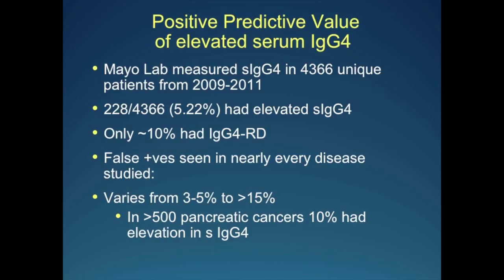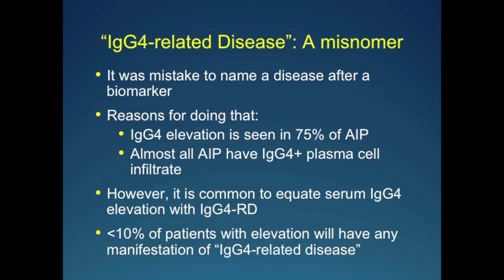The positive predictive value in the general population is very low — if you use it broadly, you're looking at a 90% chance of a false positive. I get calls all the time: 'What do I do with this IgG4? Why did you measure it? Well, the patient had a headache.' The symptoms of IgG4-RD actually go from headache to toe pain, so you could measure it for any reason and end up with a false positive. I believe the name 'IgG4 disease' is a misnomer — it's never a clever idea to name a disease after a biomarker, because biomarkers are, after all, not always specific for the disease. It has unfortunately become synonymous with the biomarker, and that is most likely to lead to false positives.